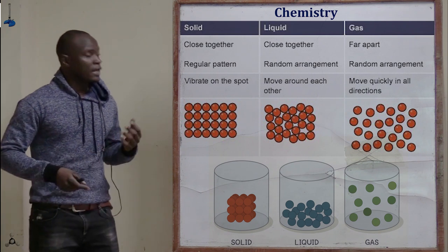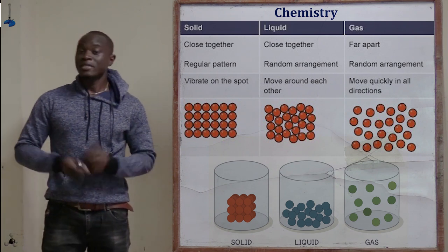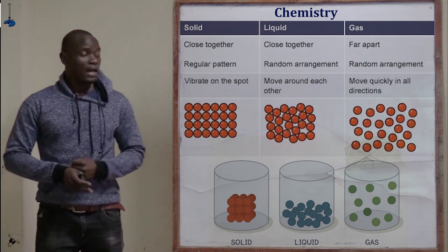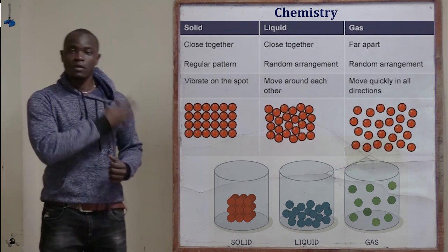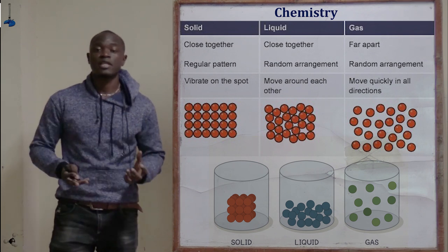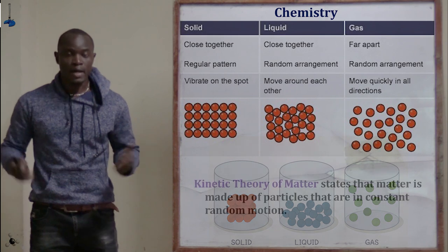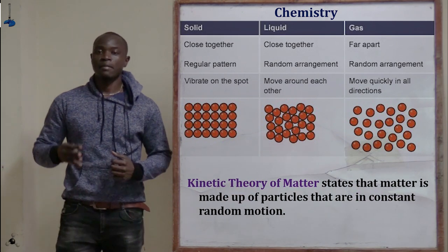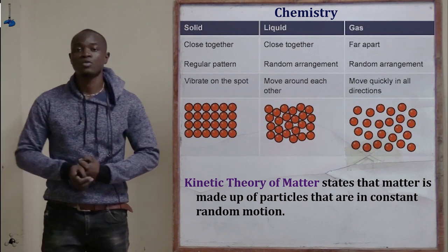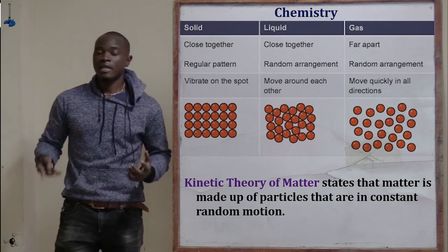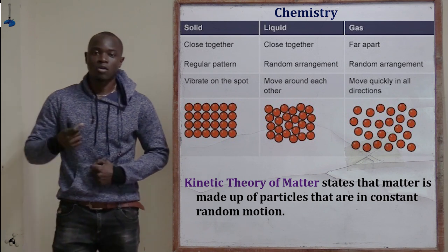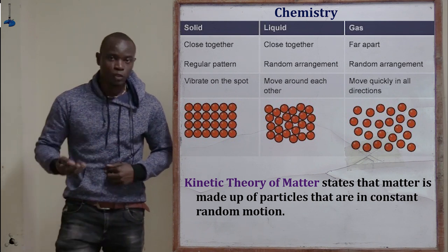In Form 1 chemistry, we studied the three states of matter — solid, liquids, and gases. Solid particles are closely packed together, liquid particles are fairly packed together, and gas particles are very far apart. This formed the basic principle of the kinetic theory of matter, which states that matter is made up of tiny particles in constant random motion.